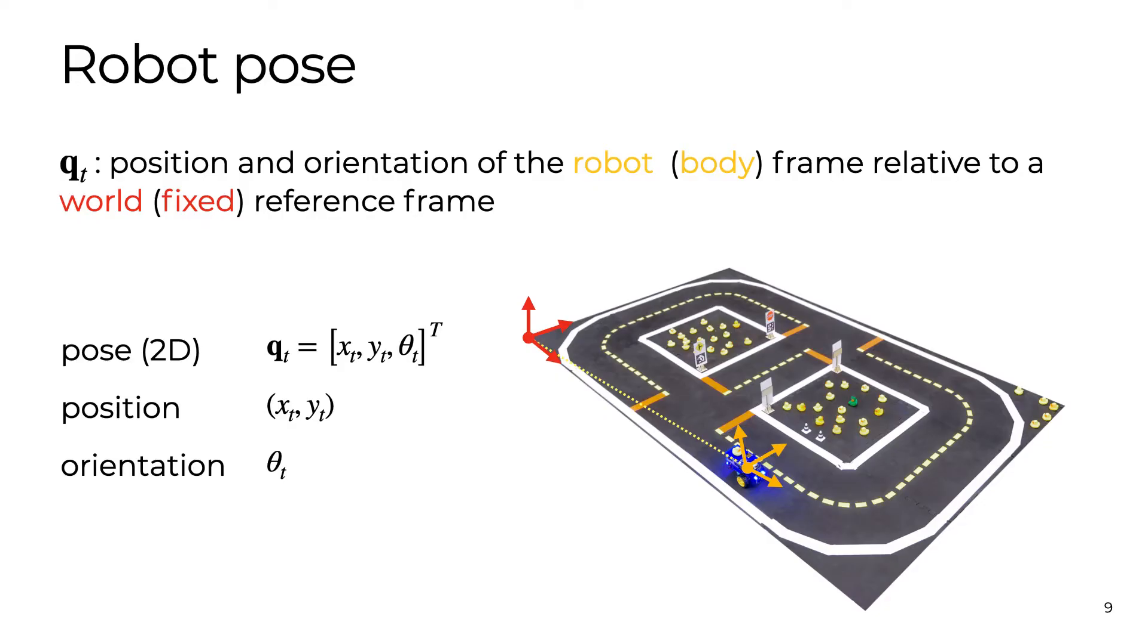A sufficient and efficient representation of the duckybot is the pose, that is the position and the orientation of the robot in space. The pose may also include the linear and the angular velocities. Duckytown is a 2D world, but pose can be generalized to 3D as well.